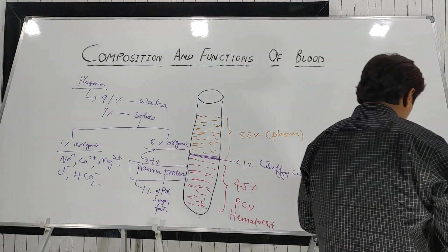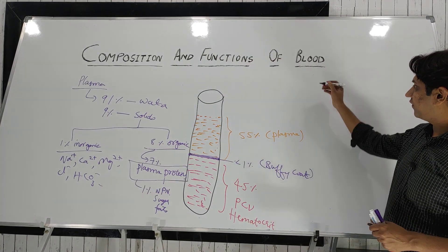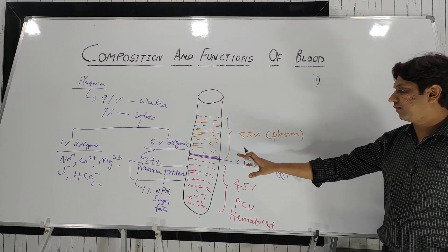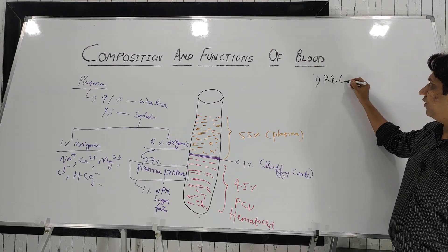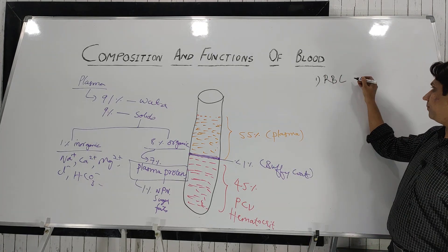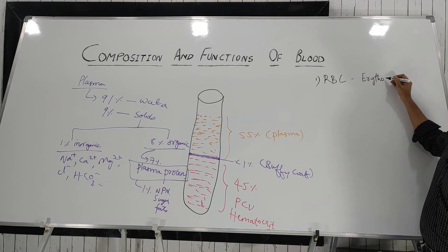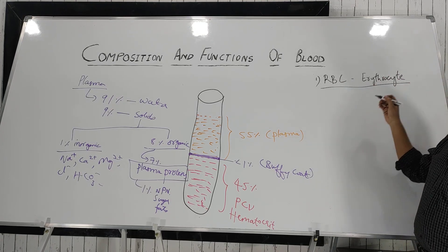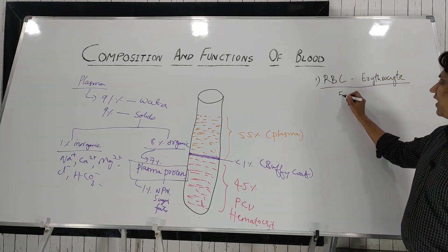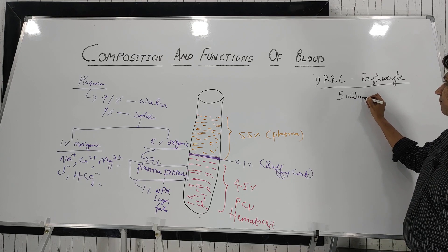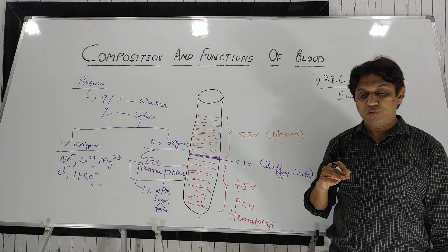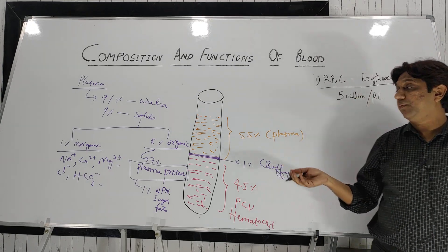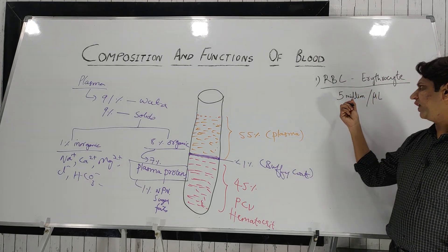Coming to the cellular part — there are three important blood cells. The first is RBCs, also known as red blood corpuscles, red blood cells, or erythrocytes. Majority of the cells are RBCs. On an average, there are around 5 million cells per microliter of blood. In males it is more and in females a bit less, but on an average it is around 5 million.